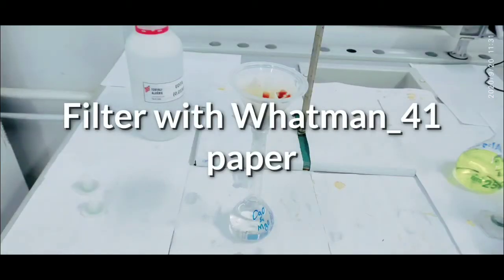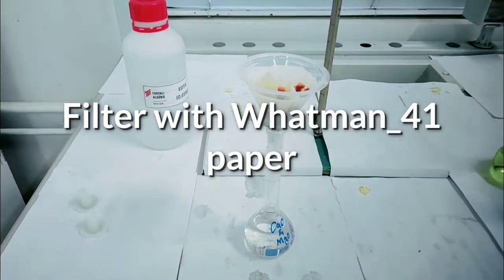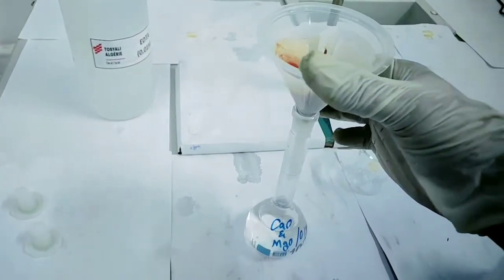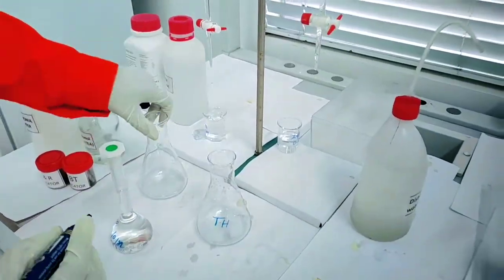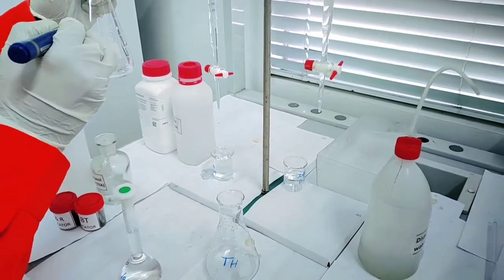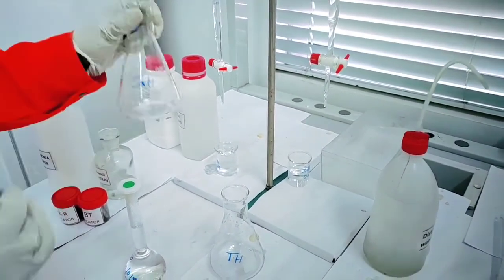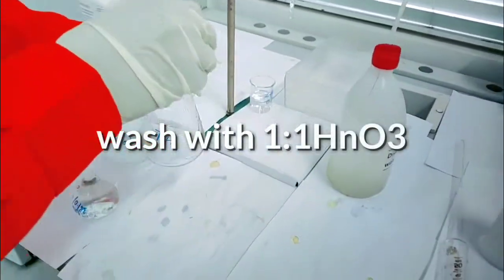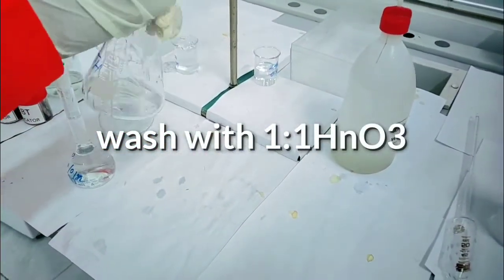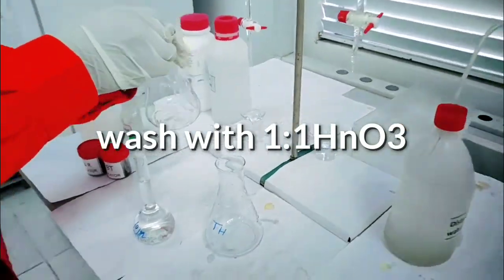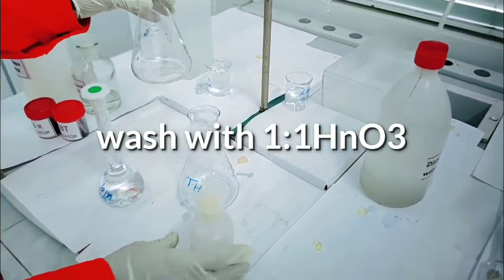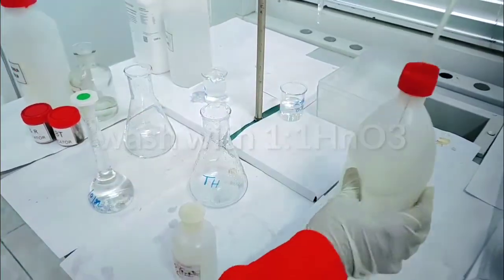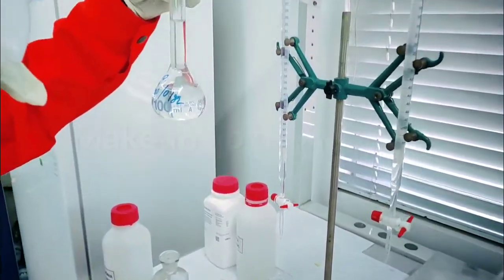Use a star folded Whatman 41 filter paper. Take two clean conical flasks, wash with one-to-one nitric acid, and make up to the mark.